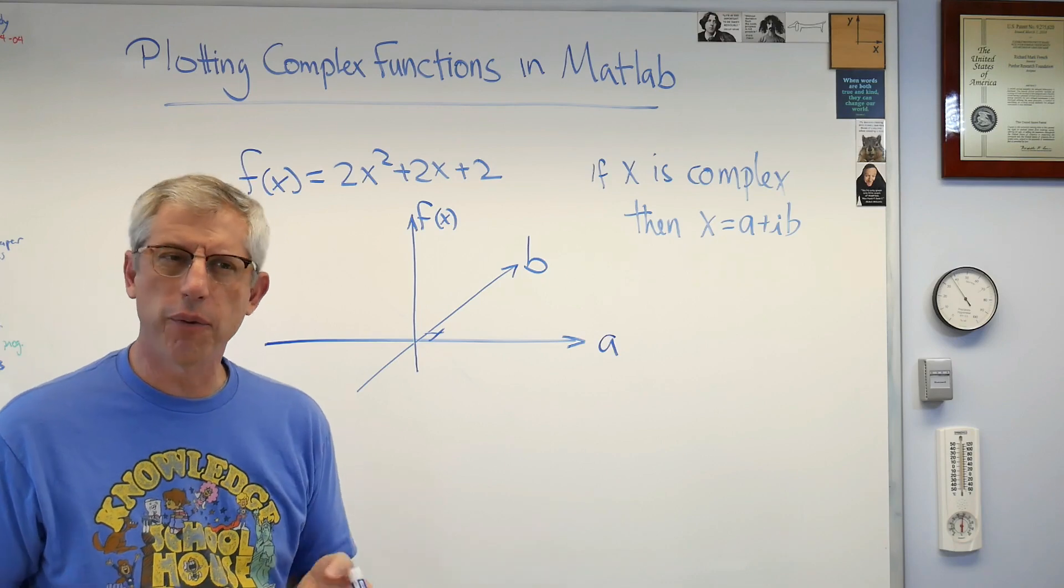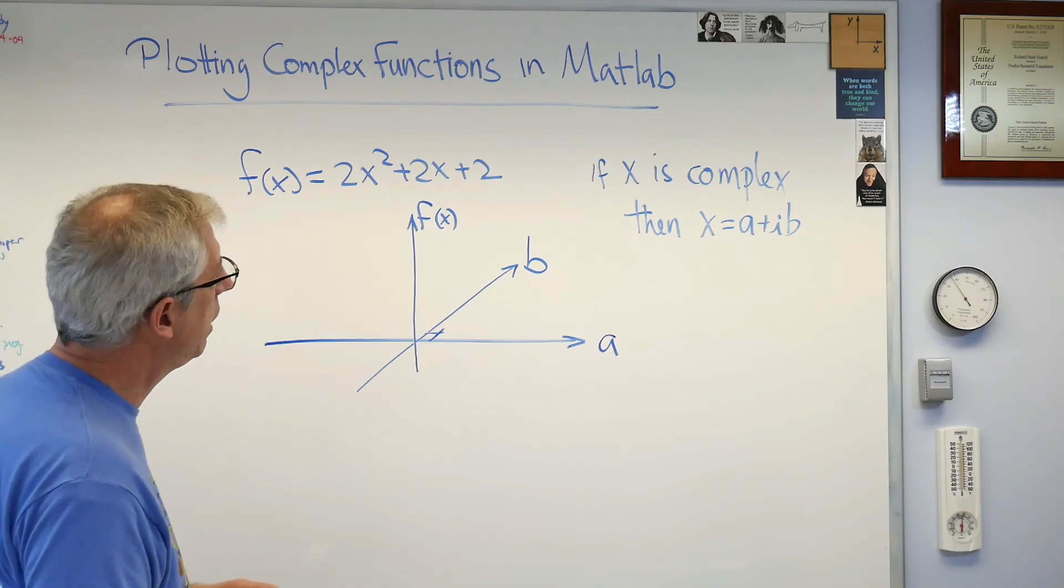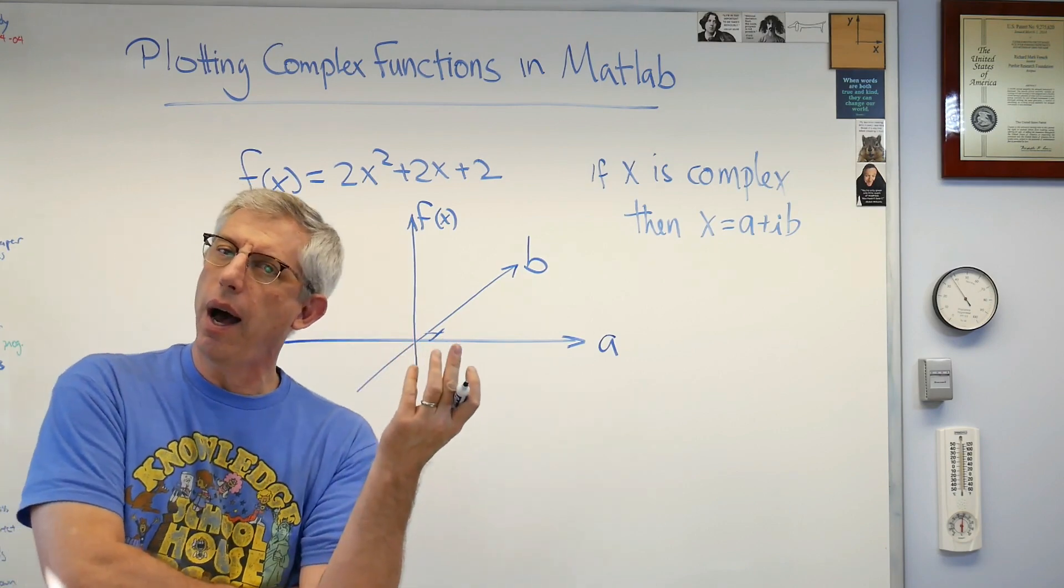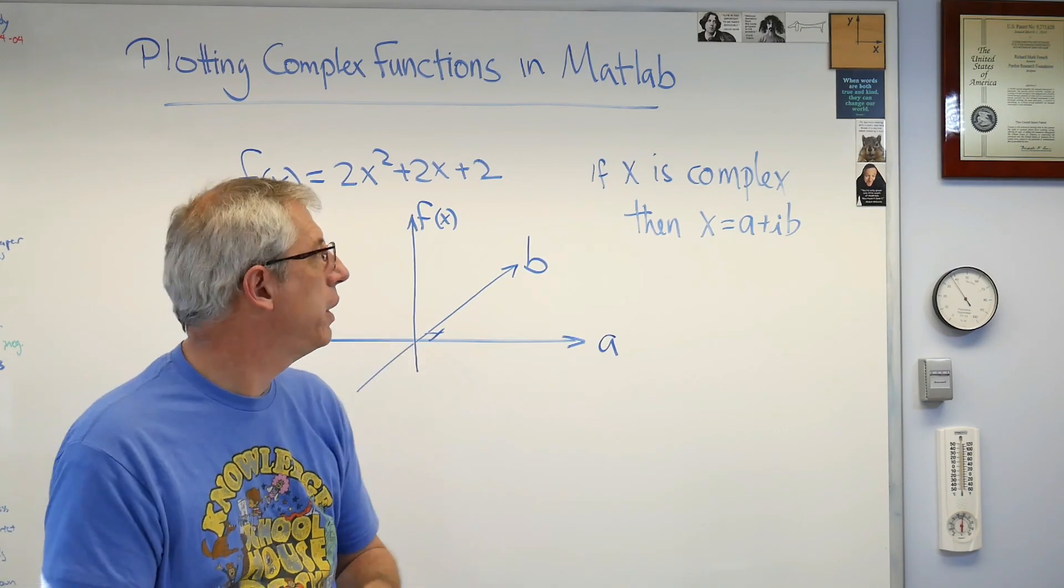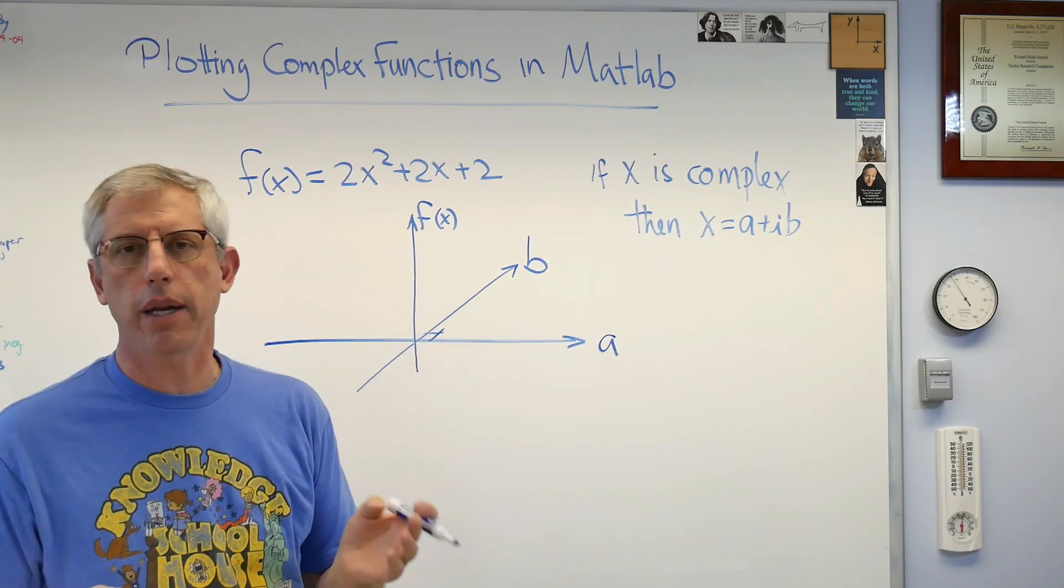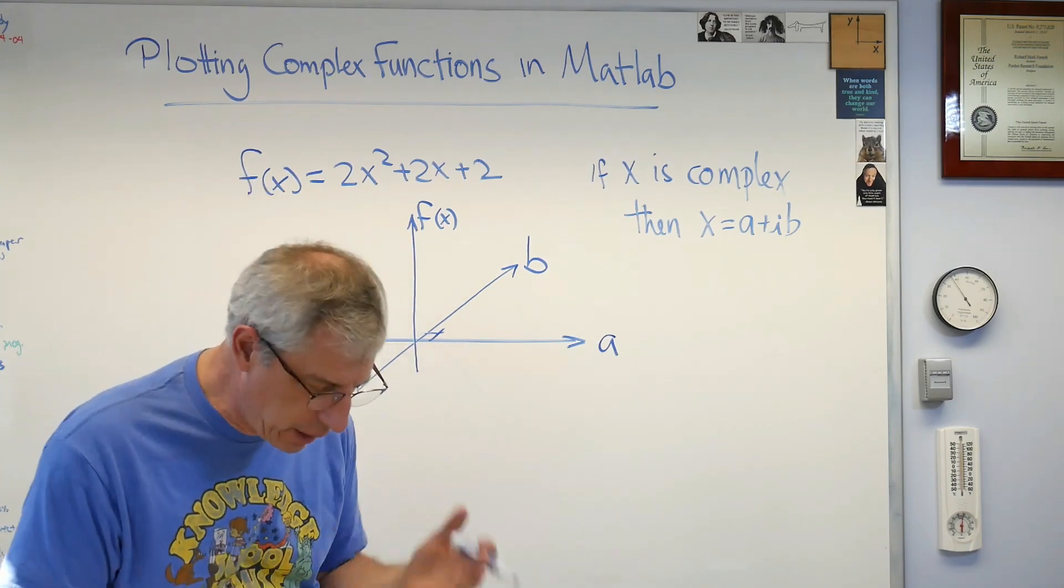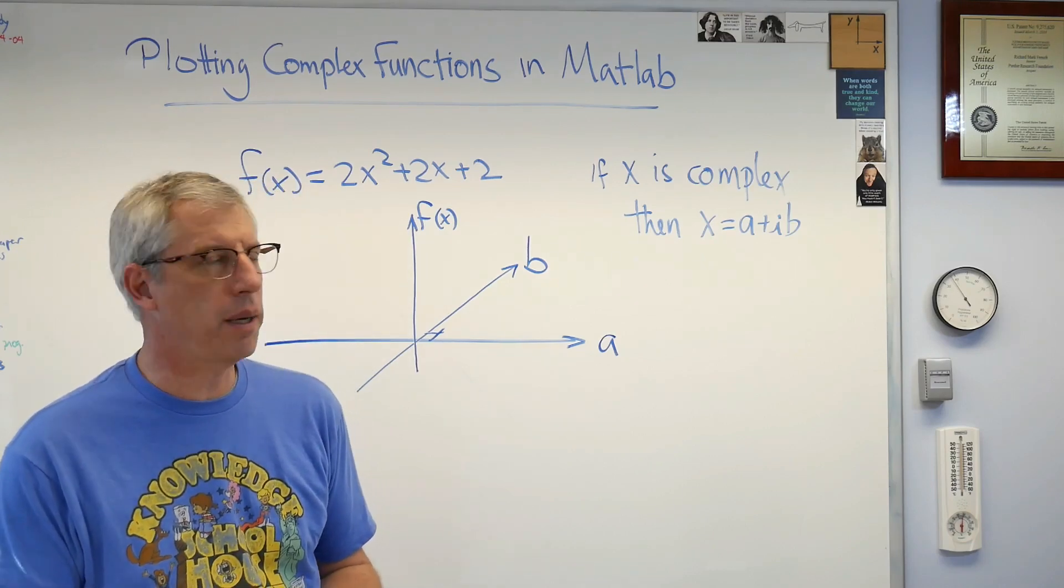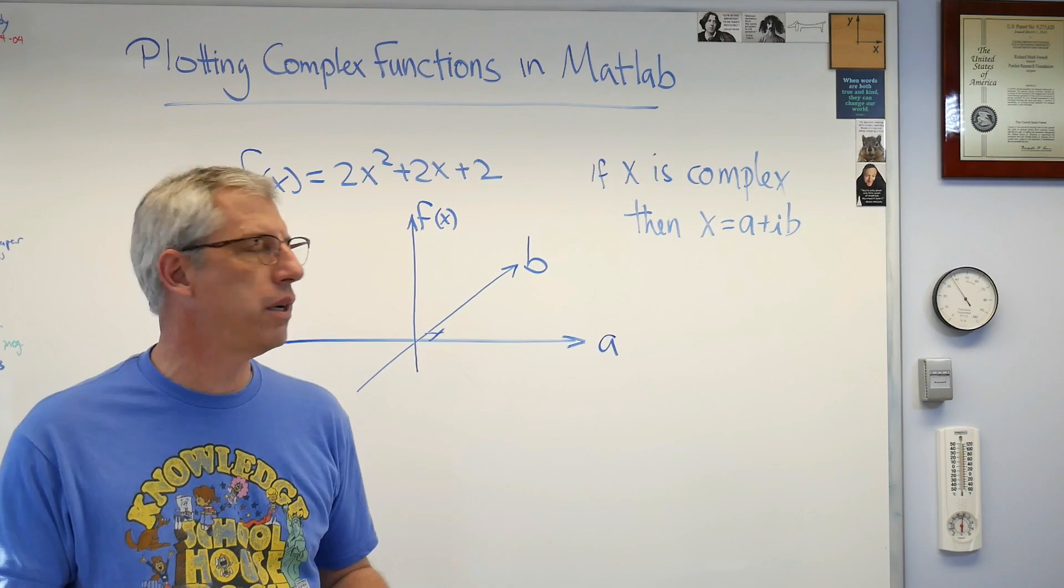If I tried to plot all that, I would get two independent variables coming in and two dependent variables coming out—that's four variables. I need four dimensions to plot that. Well, I live in three-dimensional space, so I only know how to draw things in three dimensions.